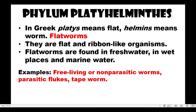Next, Phylum Platyhelminthes. In Greek, 'platys' means flat and 'helminth' means worm, so they are flatworms. They are flat and ribbon-like organisms. Flatworms are found in fresh water, in wet places, and in marine water. Examples include free-living or non-parasitic worms, but there are also parasitic ones such as flukes and tapeworms.